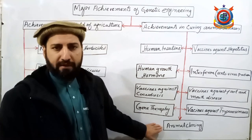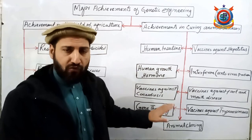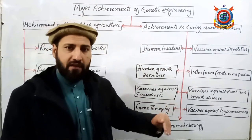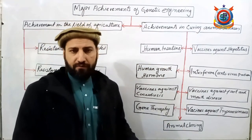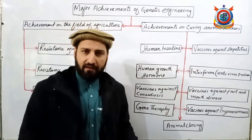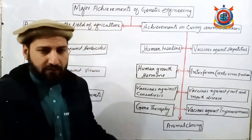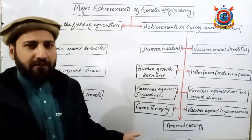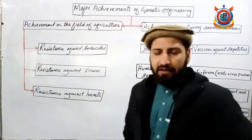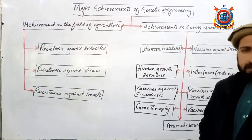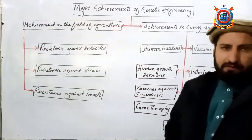Animal cloning میں جس animal سے somatic cell لیا جاتا ہے، پورا نیا animal اس کی exact copy ہوتا ہے خصوصیات میں۔ اس technique کو animal cloning کہا جاتا ہے۔ یہ اس video lecture کا اختتام ہے۔ انشاءاللہ next video lecture میں آپ کے ساتھ پھر ملاقات ہوگی، تب تک اللہ حافظ۔